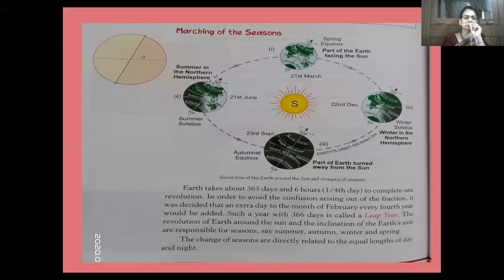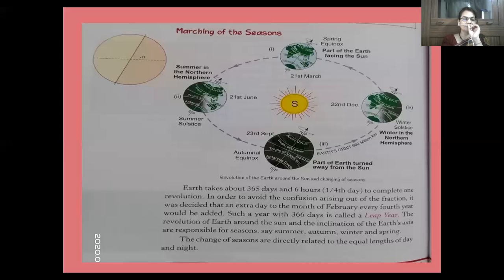At a certain point in time, the Earth is close to the Sun. This position is known as perihelion. 'Peri' is a Greek word meaning around. It occurs on January 3rd and the distance is 147 million kilometers.